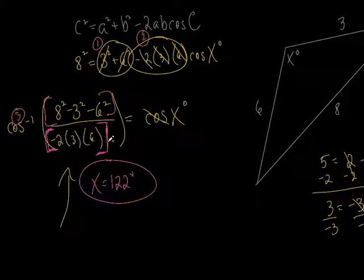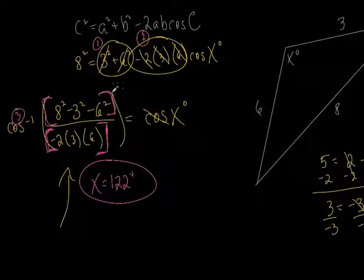The calculator is probably the hardest part of this whole thing. I like to use parentheses here and here so it works out nice and clean — stay safe and tell the calculator exactly what to compute. There you go — that's the Law of Cosines.